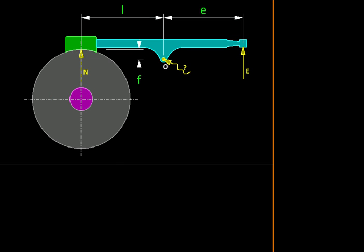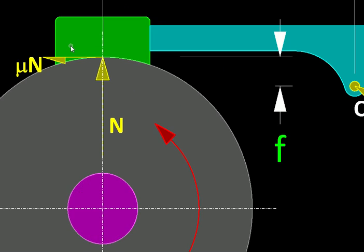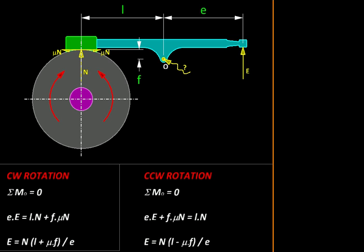Interestingly if we reverse the direction of rotation, say from clockwise to counter-clockwise, then even the direction of the frictional force is going to switch. And then we get this expression for the effort. If you compare these two expressions you will see in one case the friction is adding to the effort required, but in this case the friction is reducing, it has a negative sign so it is reducing the effort required. In this case the friction is kind of helping in the braking process.